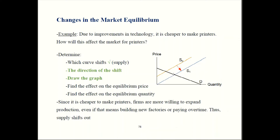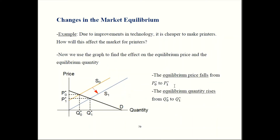Now let's talk about quantity. Originally equilibrium is over here, so the quantity was this high. Now the new equilibrium is going to be at this point, so equilibrium is going to be over here — we should see an increase in quantity. That means prices should go down and quantity should increase.